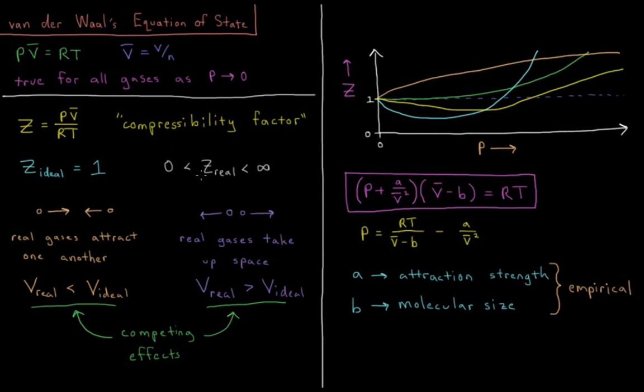The more the compressibility factor is closer to one, the more ideal the gas is behaving. So why would a gas behave non-ideally?